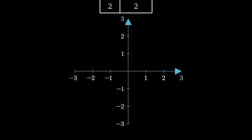Let's plot each point from our table. First the point negative 2 comma negative 2. Next negative 1 comma negative 1. Then 0 comma 0, 1 comma 1, and finally 2 comma 2.